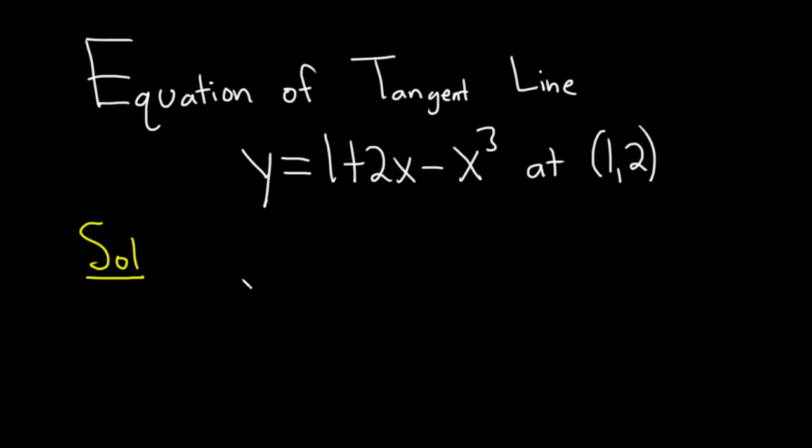So to find the equation of any line we need a point and we need a slope. Because the tangent line and this graph share a point at (1, 2), we already have the point, we simply need the slope.